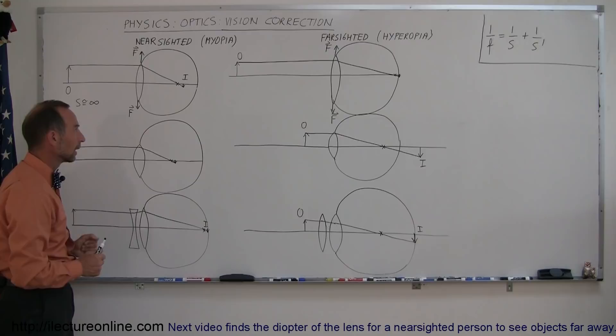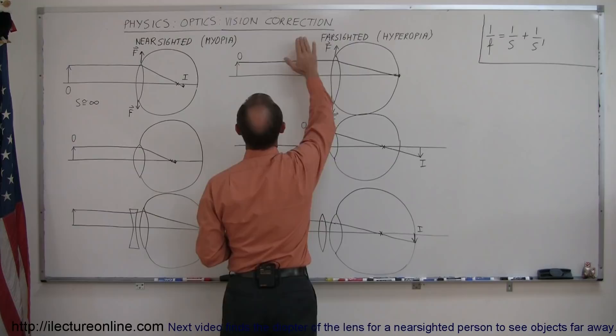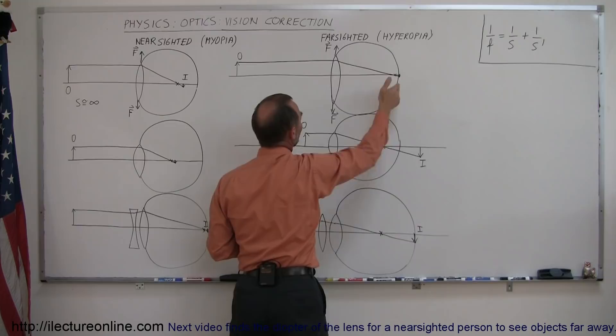A farsighted person, it's a little different. A farsighted person has no problem looking at objects that are really far away because the lens is shaped in such a way and the eyeball is shaped in such a way that when the muscles pull on the lens and the lens gets made thinner,